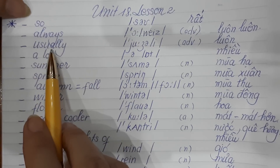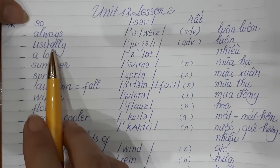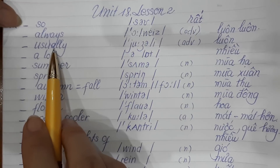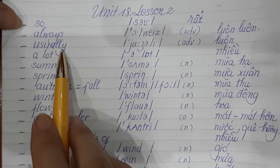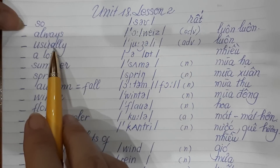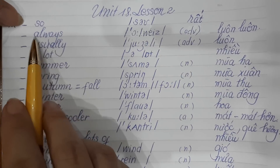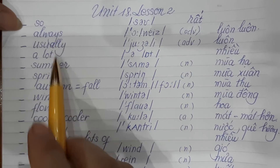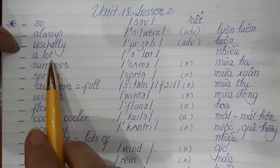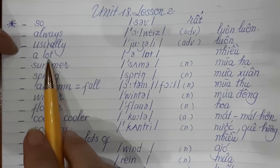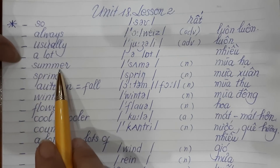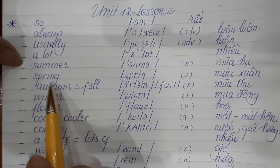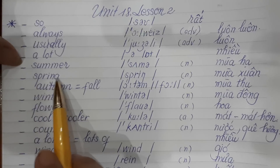Usually — trạng từ nhé. Hai từ này — usually thì mức độ nó thấp hơn từ always một chút xíu nhé. A lot — nhiều. Summer — mùa hạ hay là mùa hè nhé. Spring — mùa xuân.